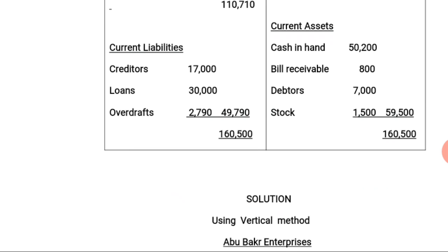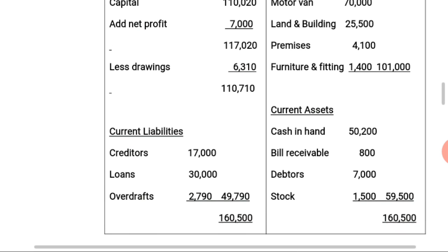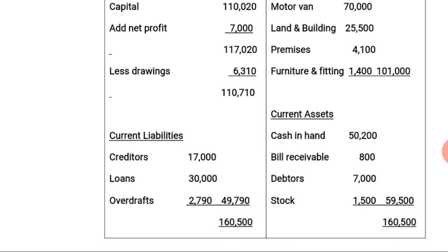Moving to the current assets, we have: cash in hand 50,200 Naira; cash at bank 800 Naira; debtors 7,000 Naira; and stock 1,500 Naira — totaling 59,500 Naira. Adding the total current assets to the fixed assets, the total on the right-hand side is 160,500 Naira.